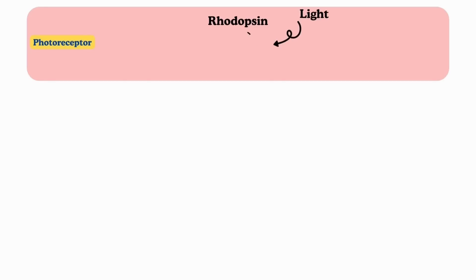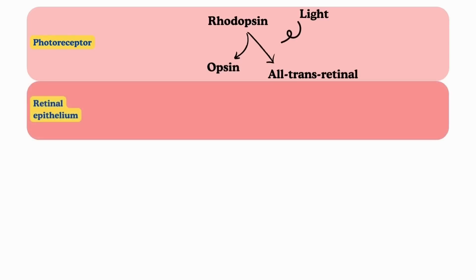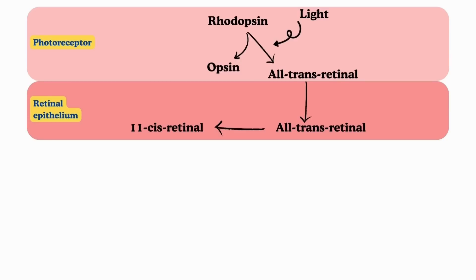Rhodopsin is found within the tightly packed discs in the outer segment of the rod cell. On exposure to light, rhodopsin splits into all-trans retinal and opsin. In the retina, a part of all-trans retinal is immediately isomerized to 11-cis retinal in the dark by the enzyme retinal isomerase present in retinal epithelium.